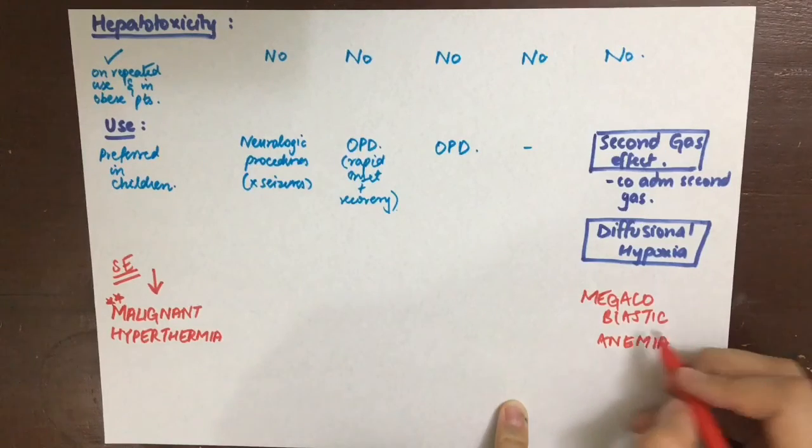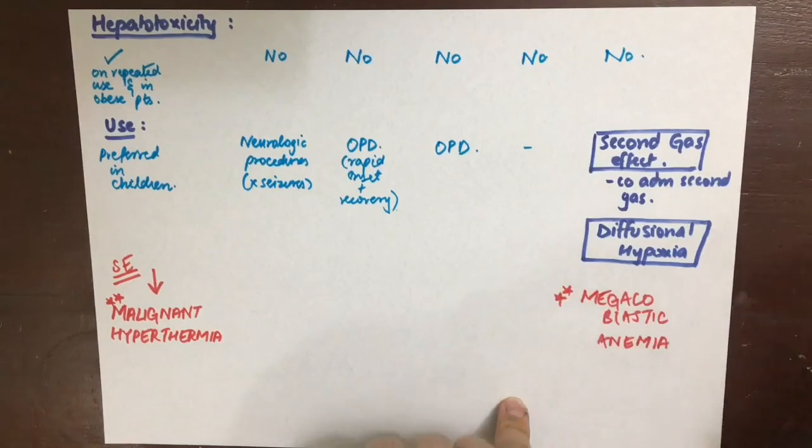The important side effect for nitrous oxide is megaloblastic anemia. How that happens is that it impairs the DNA synthesis by inhibition of methionine synthase. That's all for inhalational general anesthetics.